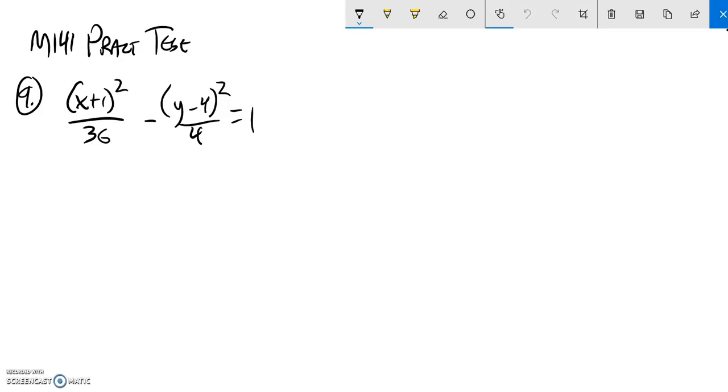M141 practice final problem number nine. Supposed to sketch a graph of this, include asymptotes, vertices, foci, everything. So I know that this is going to be a hyperbola.